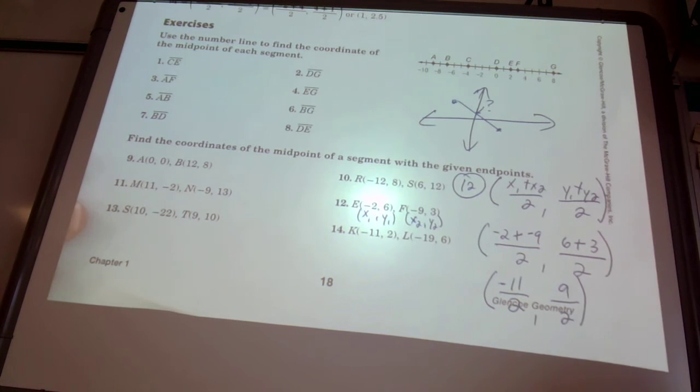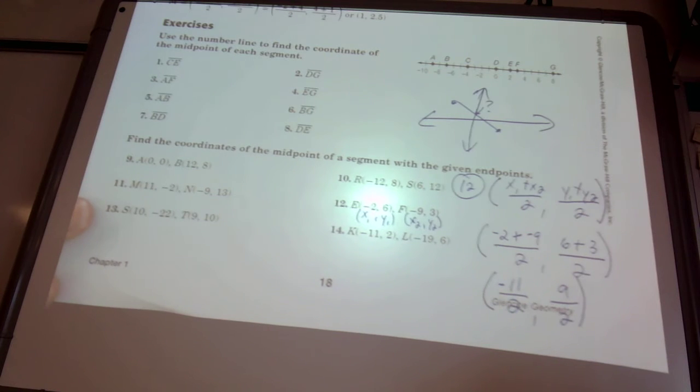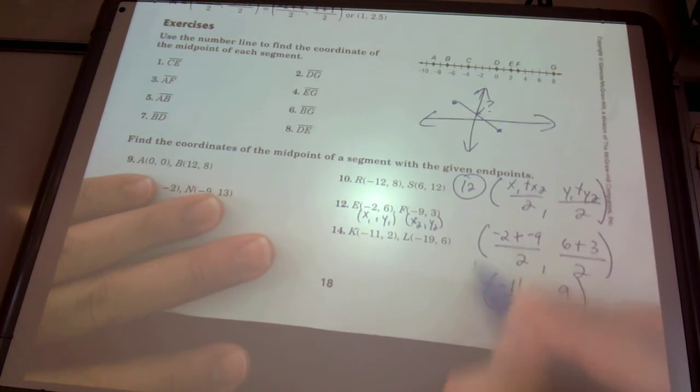PEMDAS says, and we treat a numerator kind of like parentheses. All right, so we're going to do that first. Negative 2 plus negative 9 is negative 11 over 2. That's reduced. We're good. Obviously, if you get an even number in the numerator on these, you're going to need to go ahead and reduce that, divide it out. x coordinate of our midpoint is negative 11 halves or negative 5 and a half. If you do that, that would be acceptable. All right, here we go. 6 plus 3 is 9. 9 over 2. That's reduced. We're good. You can call it 4 and a half if you wanted to do that. So here's our final answer. There's the midpoint.